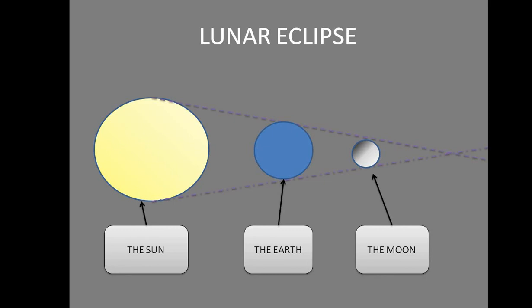The moon is a non-luminous object, so it does not shine on its own — it only reflects light. We are able to see the moon in the sky because it reflects the light of the sun. When the Earth comes in between, the shadow of the Earth is formed on the moon. The moon is not able to reflect sunlight, so we cannot see the moon in the sky. Lunar eclipses are caused on a full moon night, or what we call Purnima.